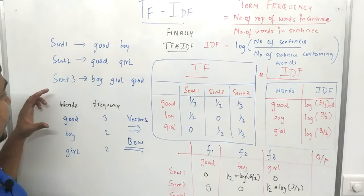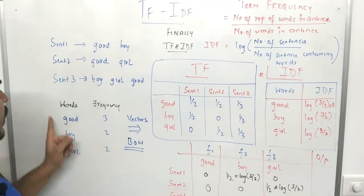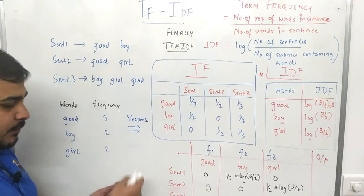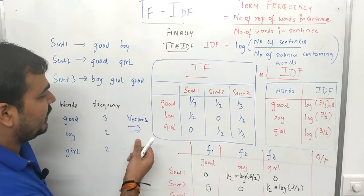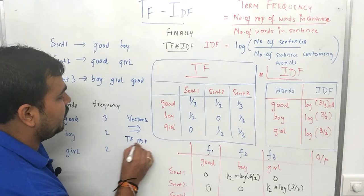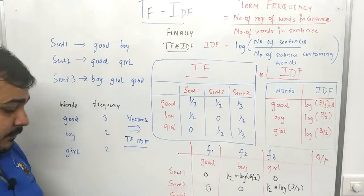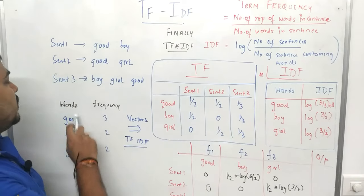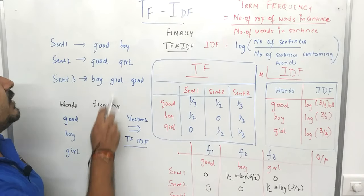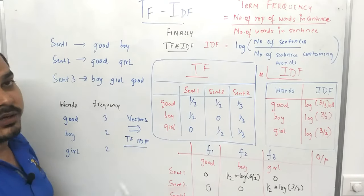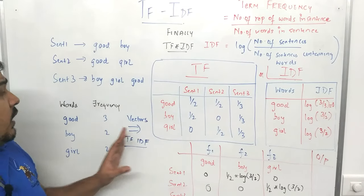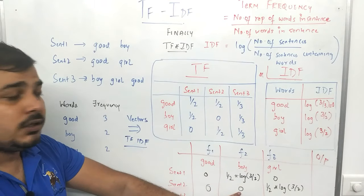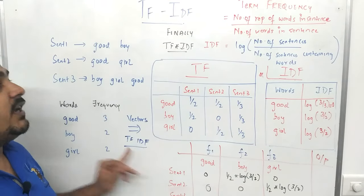Now based on these particular words, first of all we'll find out the histograms — the frequency count. I should write TF-IDF here instead of bag of words. Looking at frequency: 'good' is present three times, 'boy' is present two times, and 'girl' is present two times from the sentences. We will try to convert these whole sentences into vectors after applying the TF-IDF technique.